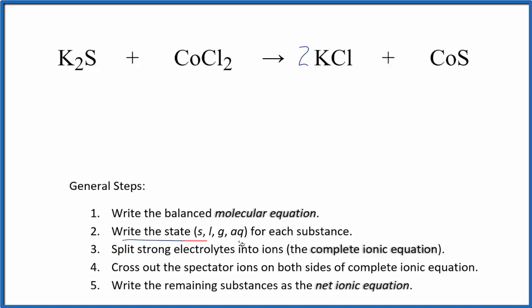Now we can write the states for each substance. If you know your solubility rules, potassium compounds are soluble, so these two substances will be aqueous. Chloride compounds are often very soluble, so these three are all aqueous. They're going to dissolve and dissociate into their ions.